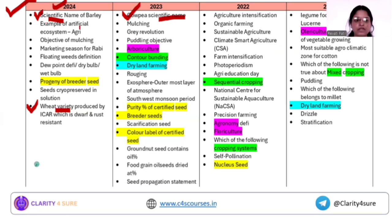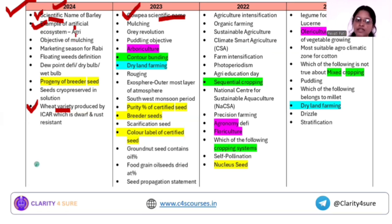The next question is: which of the following is an example of an artificial ecosystem? This is part of ecosystem, environment, and ecology. The answer is that agriculture is the artificial ecosystem.